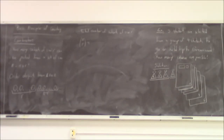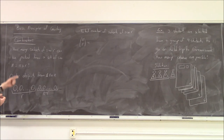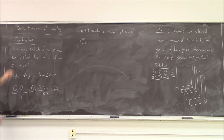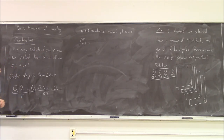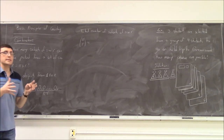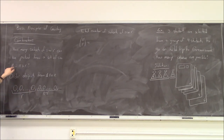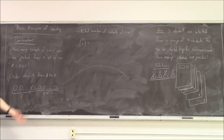An important application of the overcounting principle is combinations. We want to derive a formula for the following problem: suppose we have a set containing n objects and we want to pick a subset containing r objects. How many possibilities are available to us? You can imagine there is a class that has n students and r of those students are to be selected and the others not. How do we find the number of possible selections?